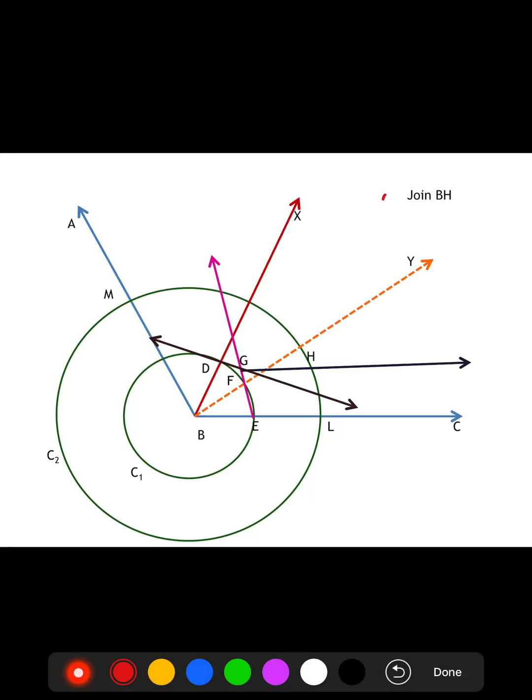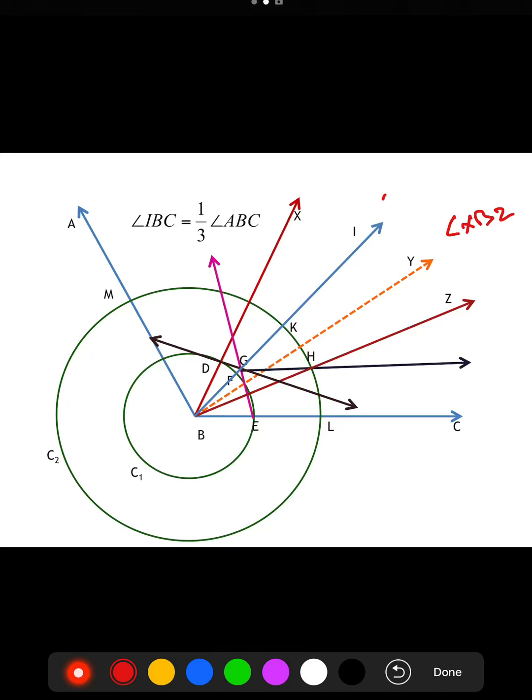Now draw the angle bisector of angle XBZ, which cuts the circle C2 at a point K. So that now our claim is angle LBK is one third of angle ABC.